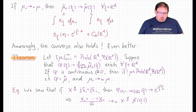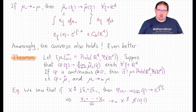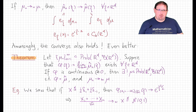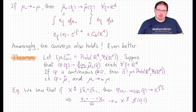Thus, we don't even need to know that μ̂n converges to μ̂ for a predetermined measure. We only need to know that μ̂n converges at all. And if the limit function happens to be continuous at just one point, then it actually is continuous everywhere, is the characteristic function of a unique measure, and that measure is the weak limit of the sequence of measures μn.